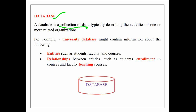A database is a collection of data that describes the activities of one or more related organizations. For example, if we take a university database, it might contain information about entities such as students, faculty, and courses, and the relationships between them can also be stored in the database.